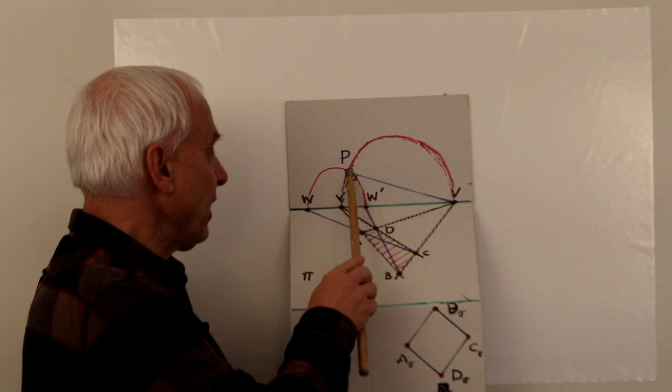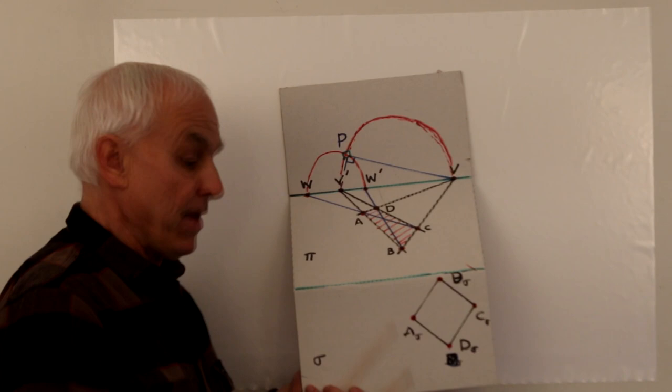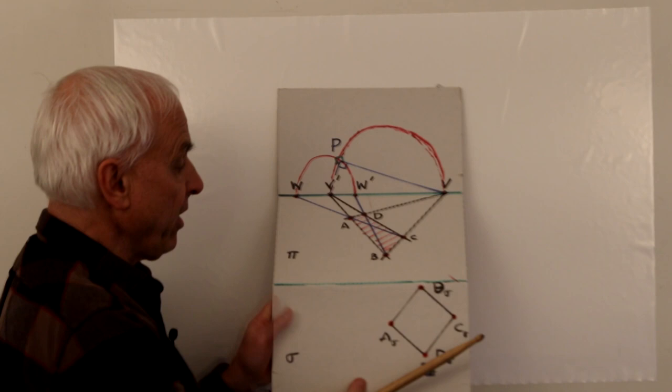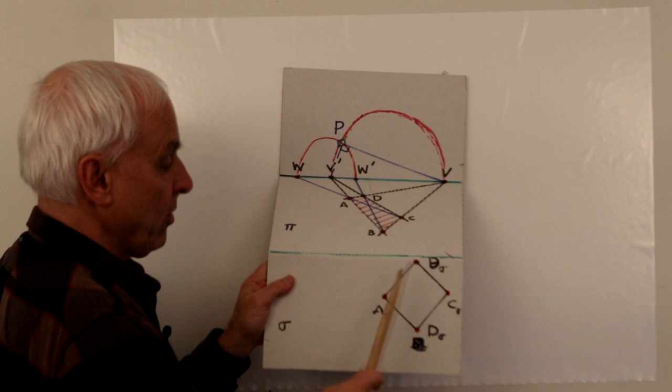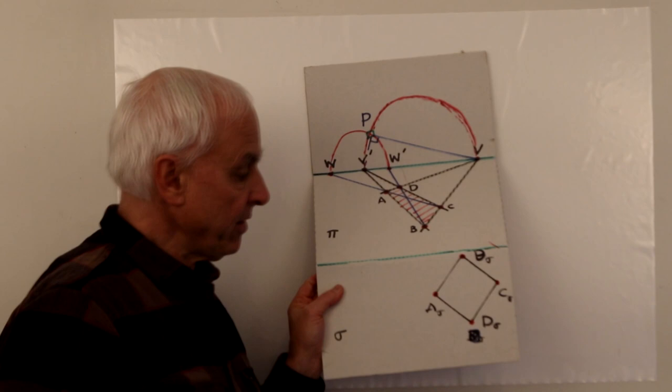Now the actual statement of the problem is in terms of perspectivity from the square. If we have quadrilateral ABCD and we want to find a square, we just make this diagram, place P according to these two circles, create the square in plane σ, and then the perspective image of this square from point P will be the required quadrilateral ABCD. It's a completely general argument.